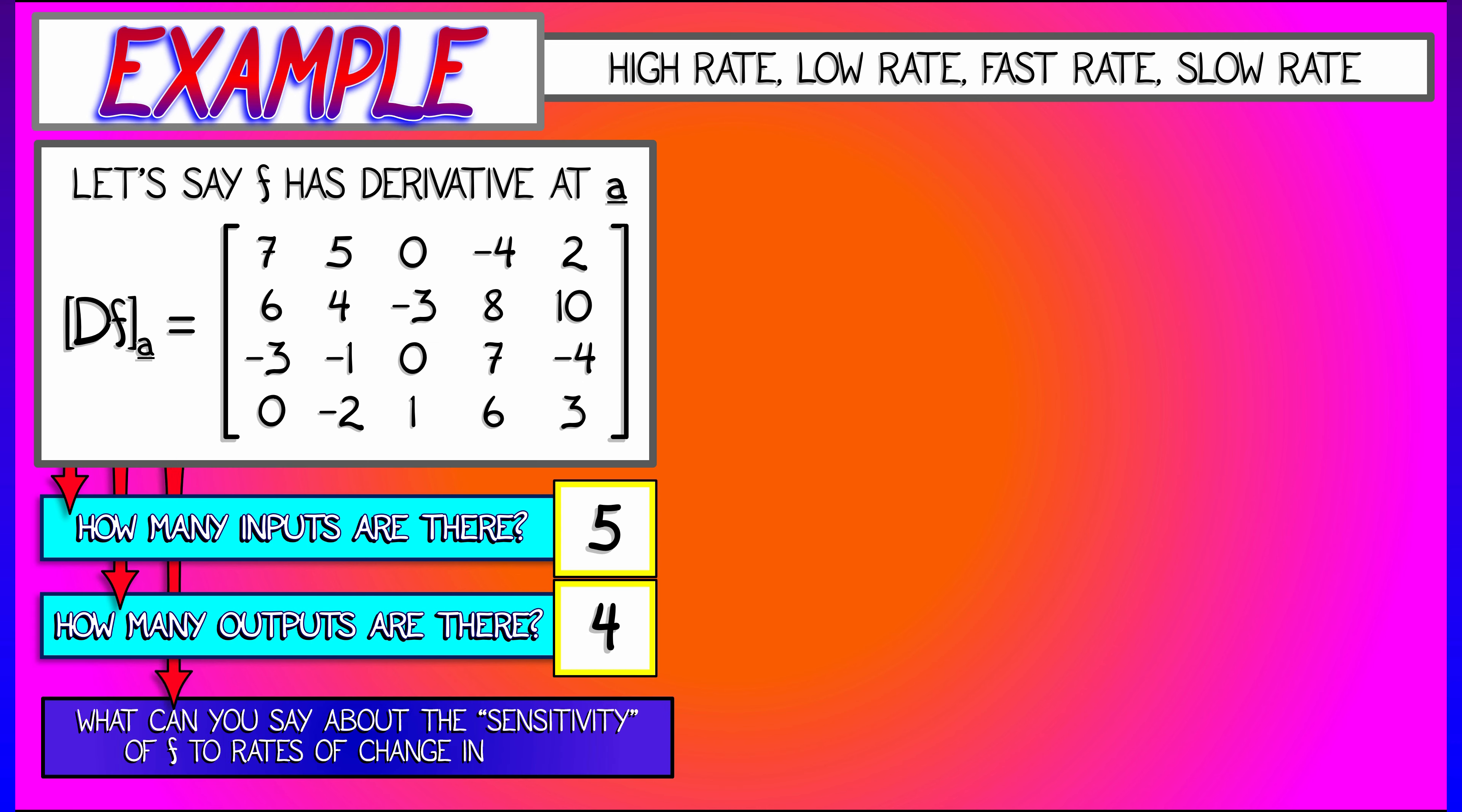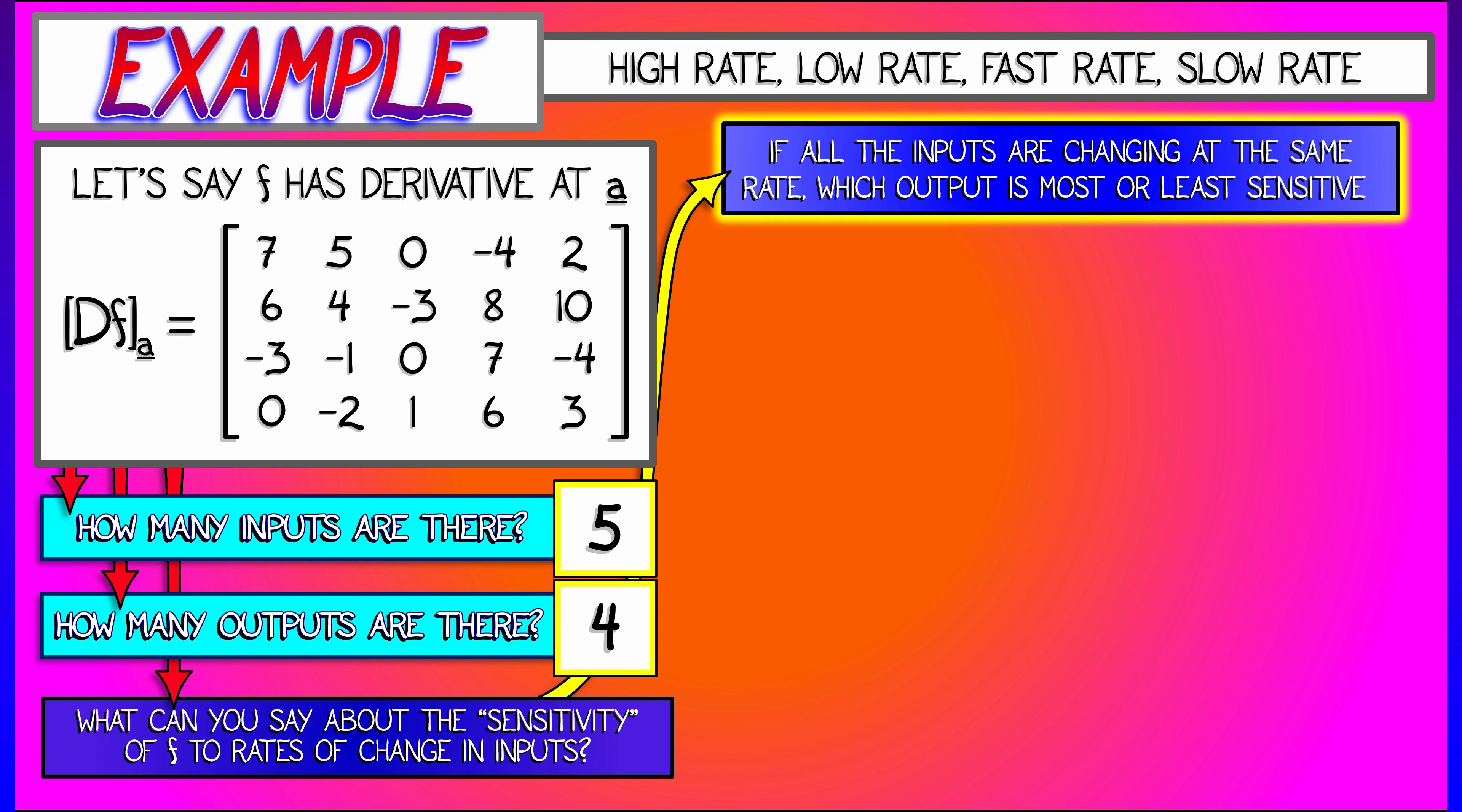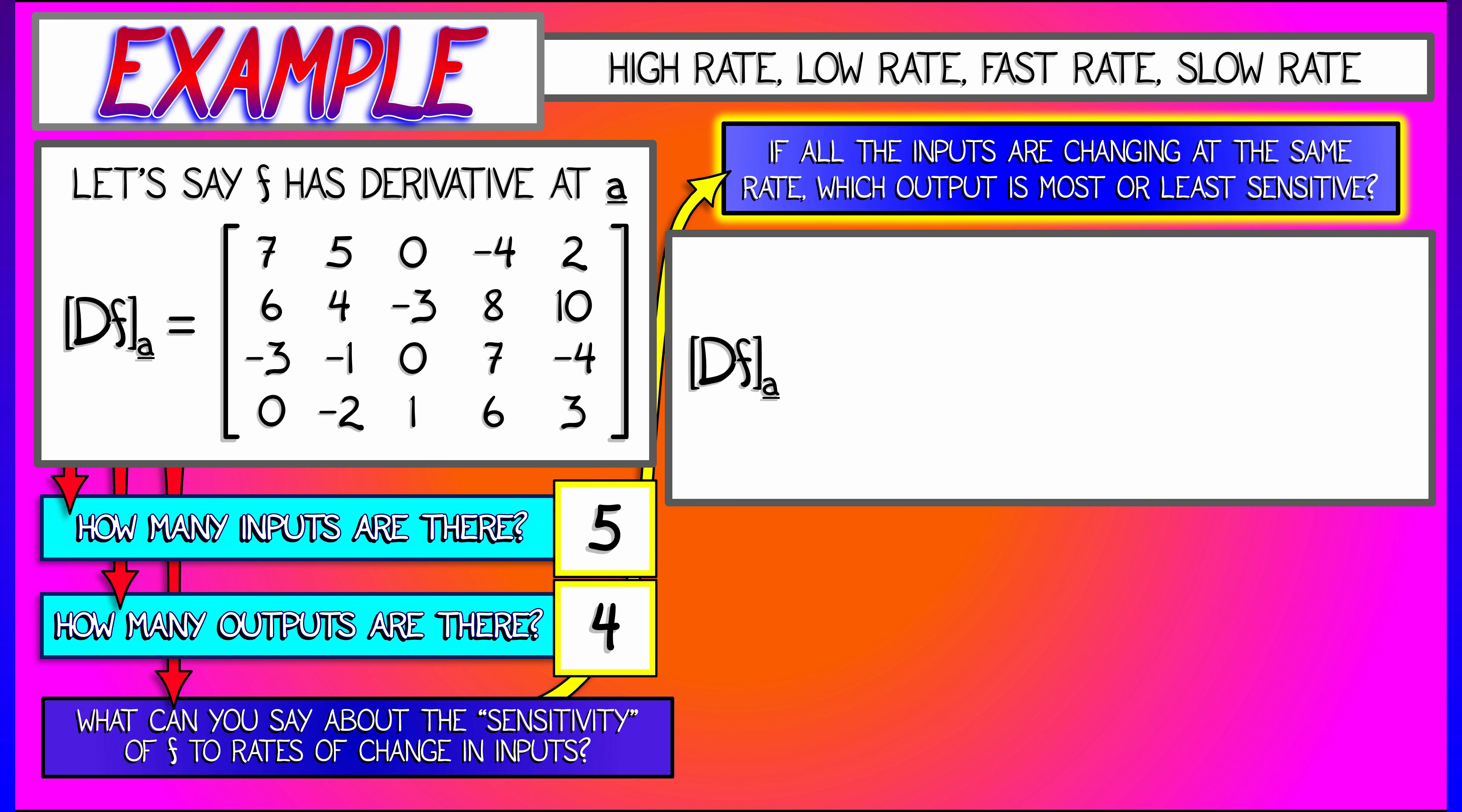Now, what can you say about the sensitivity of the outputs of f with respect to the inputs at this particular location? Well, that's really what the derivative tells you. Let's say for concreteness that all the inputs are changing at the same rate. I want to know which output is most sensitive to that change, which output is least sensitive to that change.